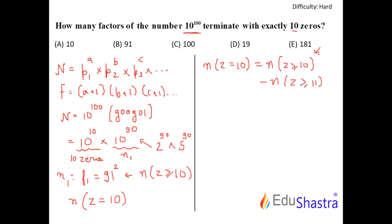Because this will include 10, 11, 12, 13, all the way up to 100. And this will include 11, 12, 13, 14, all the way up to 100 zeros. Subtracting this from this gives me the required exactly 10 zeros.